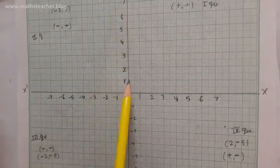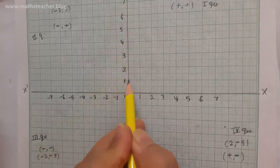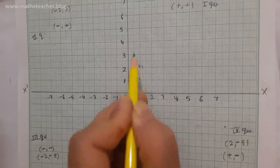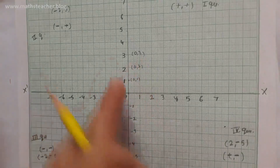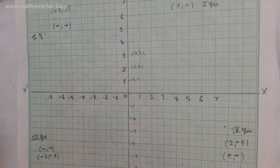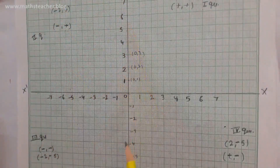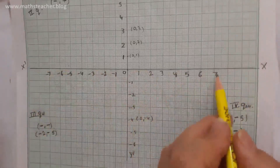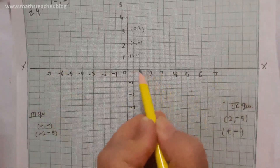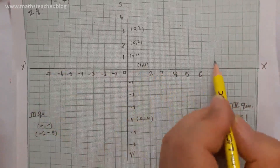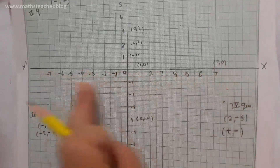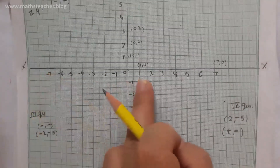If a point is on the y-axis, like (0, 1), (0, 2), (0, 3) — anywhere on the y-axis — x will always be 0. If a point is on the x-axis, like (1, 0), (4, 0), (7, 0) — y coordinate will always be 0. So for all points on the x-axis, the y coordinate is always 0, and for all points on the y-axis, the x coordinate is always 0.